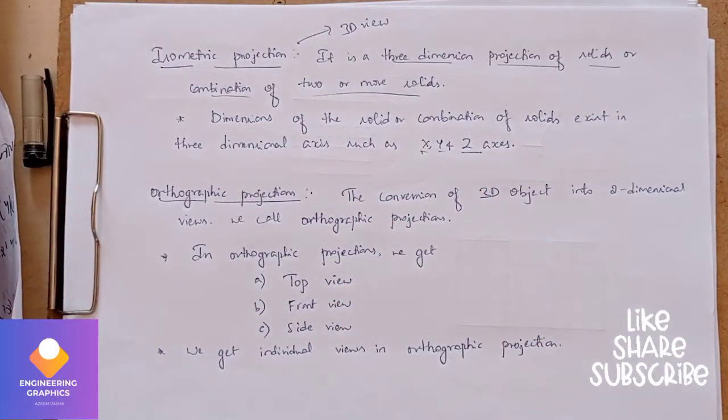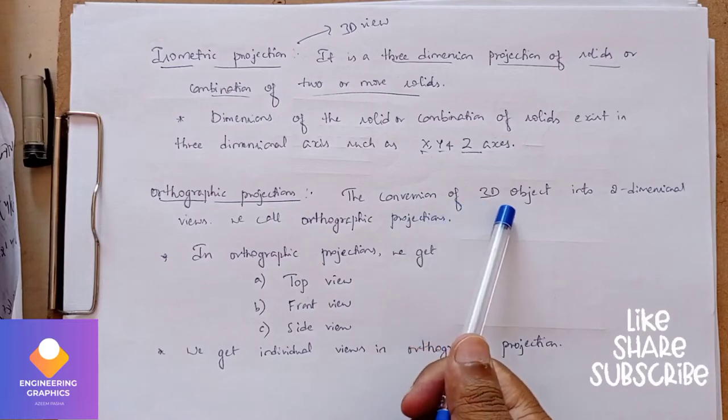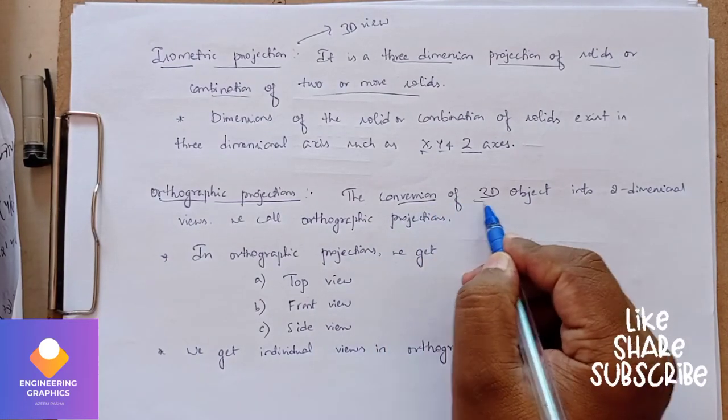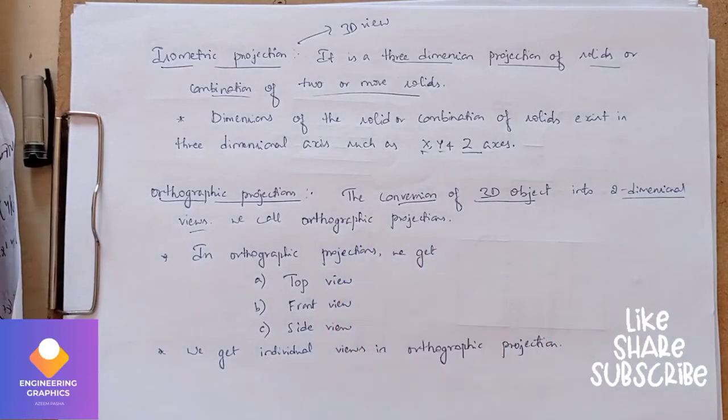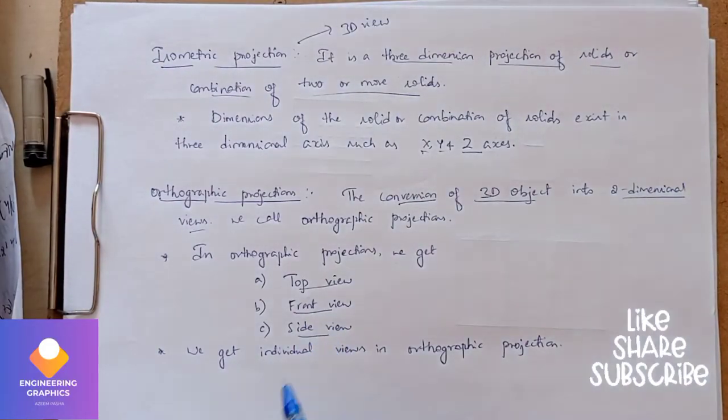y and z axis. That's what your isometric is. Similarly, we have orthographic projection, which is nothing but conversion of 3D object into two-dimensional views. We call that as orthographic projections. In this we have top view, front view, and side view. These are individual views in the orthographic projection.